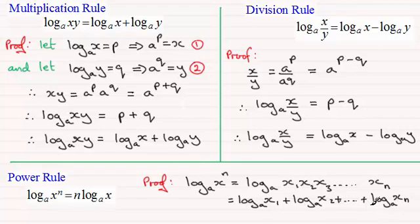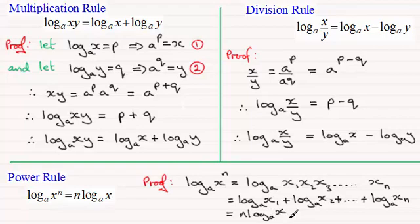So I've written this n times, and each one of these is exactly the same value. You can see that if I repeat this n times, this addition just becomes n times the log of x in base a. And that proves that result.